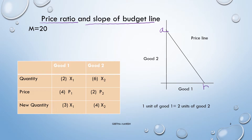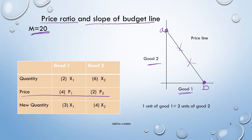In the diagram you can see AB is the budget line, which shows different possible combinations of good one and good two which a consumer can buy given his income and the prices of both the goods. Anywhere on the budget line a consumer is spending his entire income either on good one, good two, or on both the goods. This budget line is also known as the price line because it shows us that one unit of good one is equal to two units of good two. Thus, price ratio is equal to P1 divided by P2.